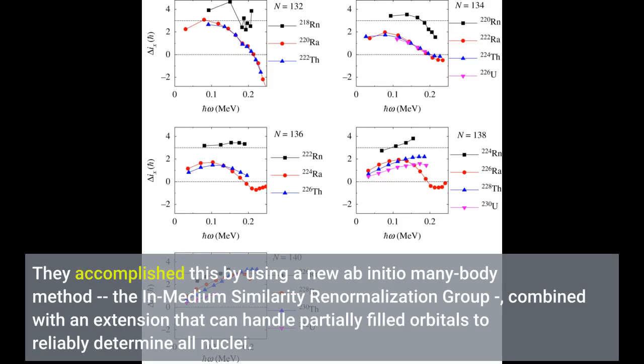They accomplished this by using a new ab initio many-body method, the in-medium similarity renormalization group, combined with an extension that can handle partially filled orbitals to reliably determine all nuclei.